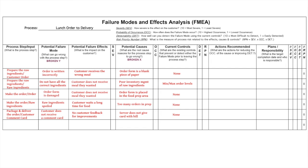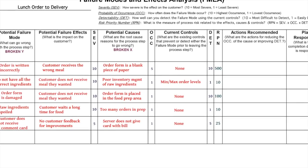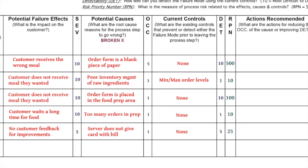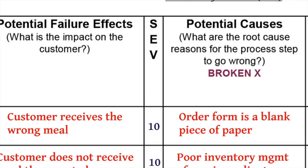The sixth step involves completing several columns. You assign ratings in three columns to calculate a Risk Priority Number, or RPN, for a specific process step and input. Those columns are severity (SEV), occurrence, and detectability. Your team will agree on values using a scale of 1 to 10, where only the values of 1, 5, and 10 are used on the form. Everyone must agree on the interpretation of the rating scale to ensure all factors are assessed using the same measuring stick. When rating severity, ask: what is the importance or impact on the customer requirements? A 10 represents the most impactful end of the scale and 1 is the least impactful.